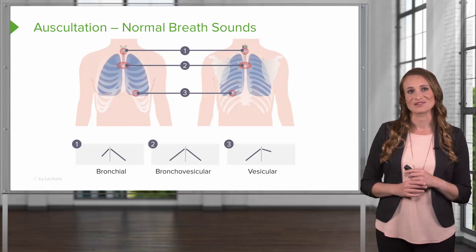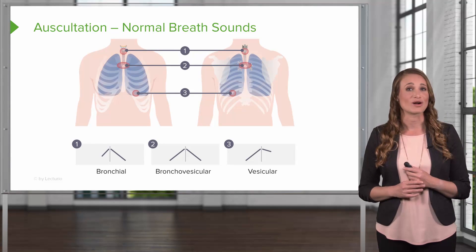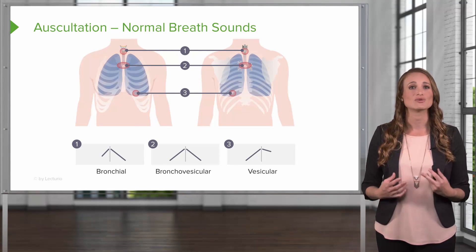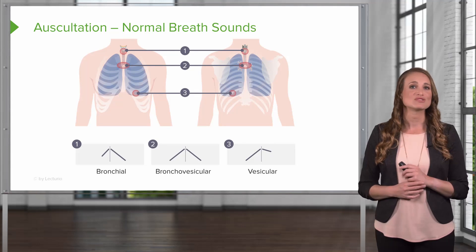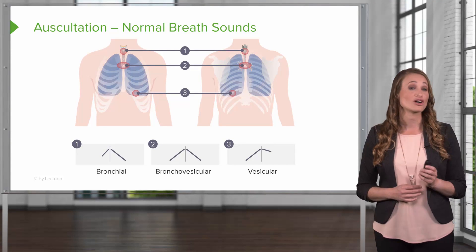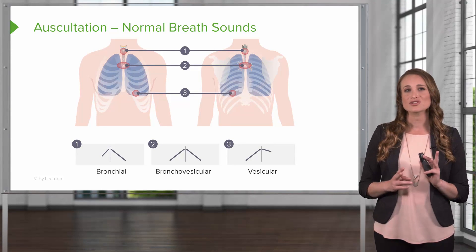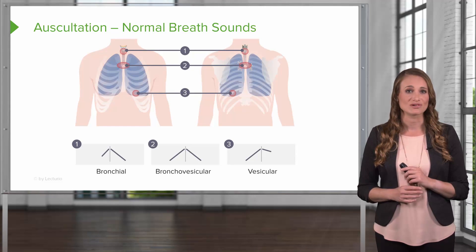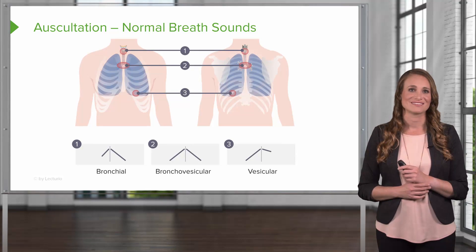Last, you'll listen for vesicular sounds, and these are found over the lesser bronchi, the bronchioles, and the actual lobes of the lung. The inspiratory phase is longer than the expiratory phase, and these are low frequency, non-musical, and barely audible at rest.